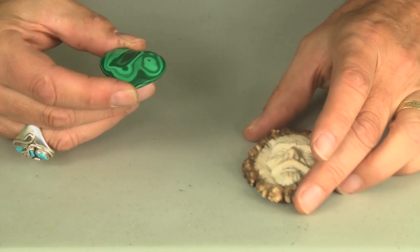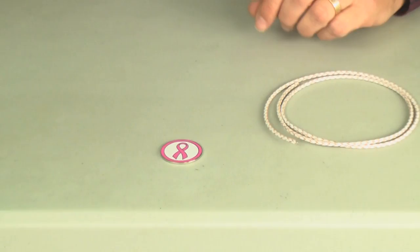Today, we're going to use a breast cancer awareness medallion as the bolo element. We have these and we sell the whole completed bolo tie. Here's what we're going to do. We're going to use a tension clasp and attach it to that.